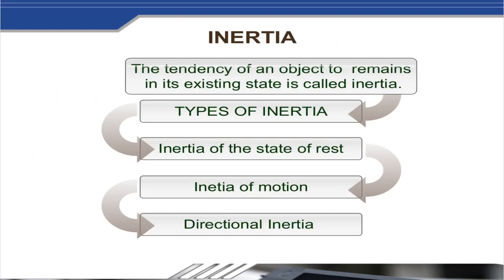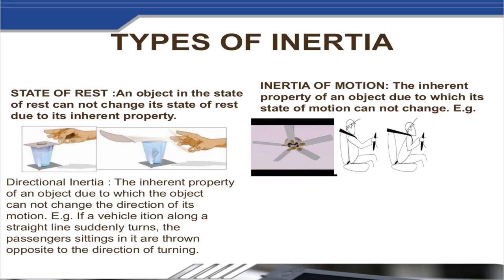Inertia is the tendency of an object to remain in its existing state. There are three different types of inertia: inertia of state of rest, inertia of motion, and directional inertia.